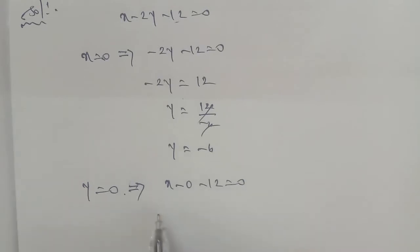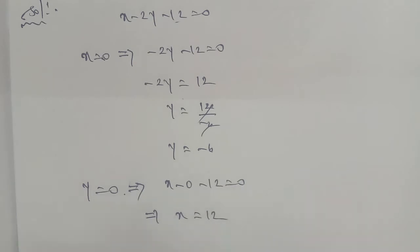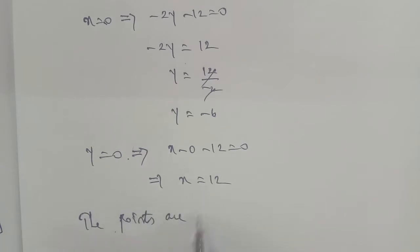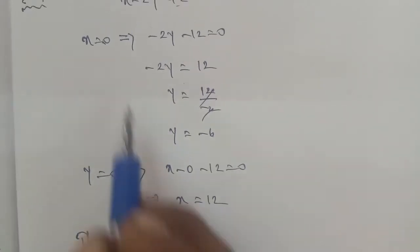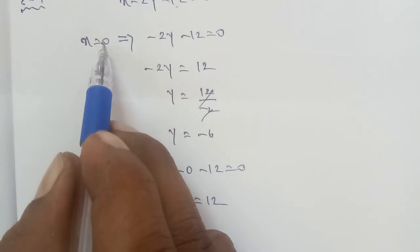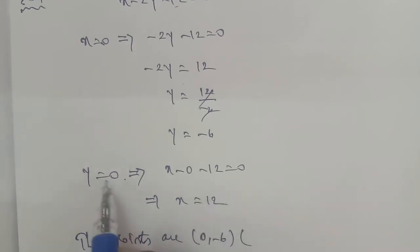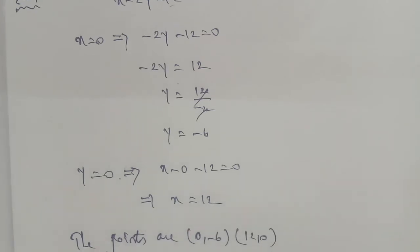So the points are: x comma y — that is, x value 0, y answer minus 6, that is (0, minus 6). And x value 12, y answer 0, that is (12, 0).